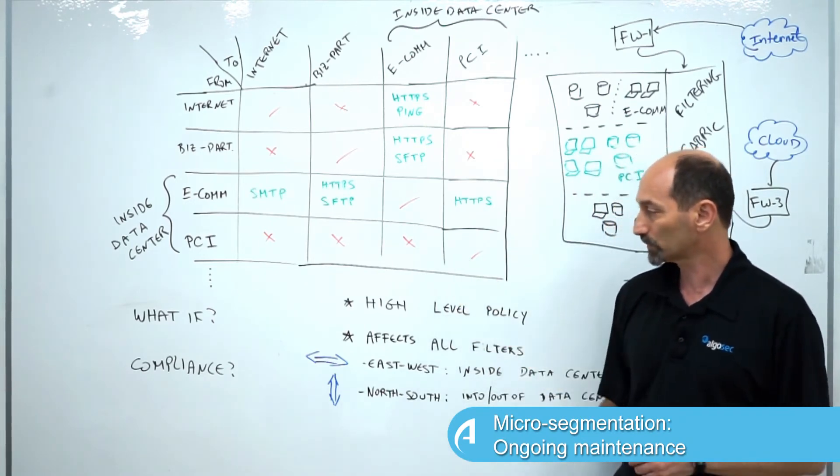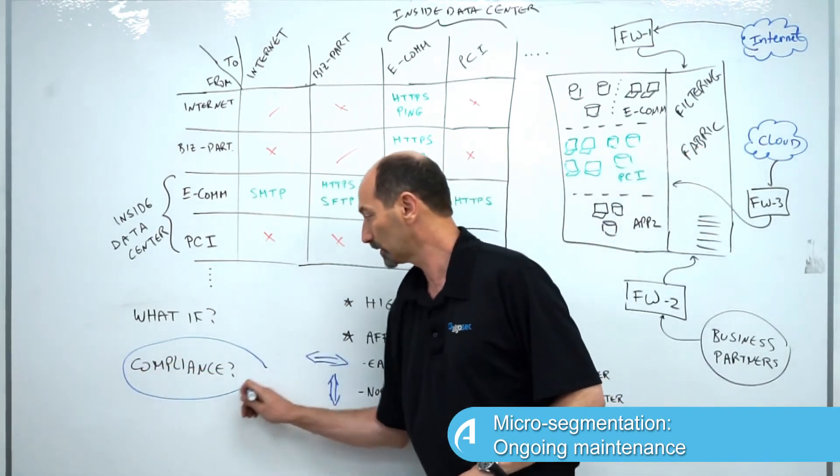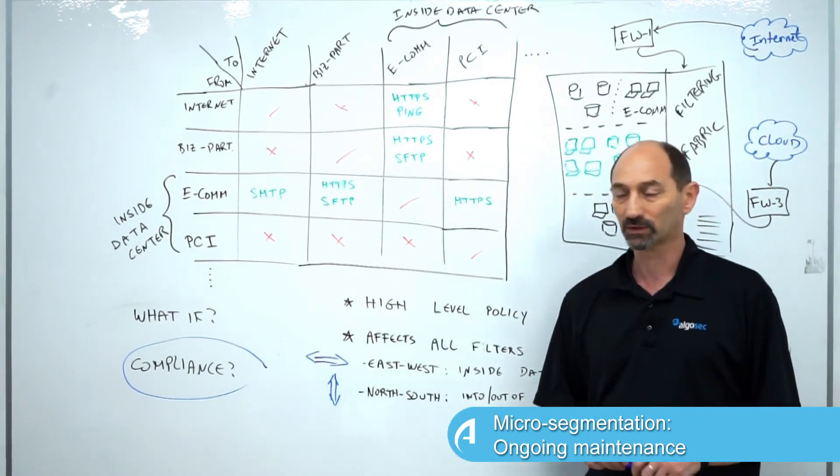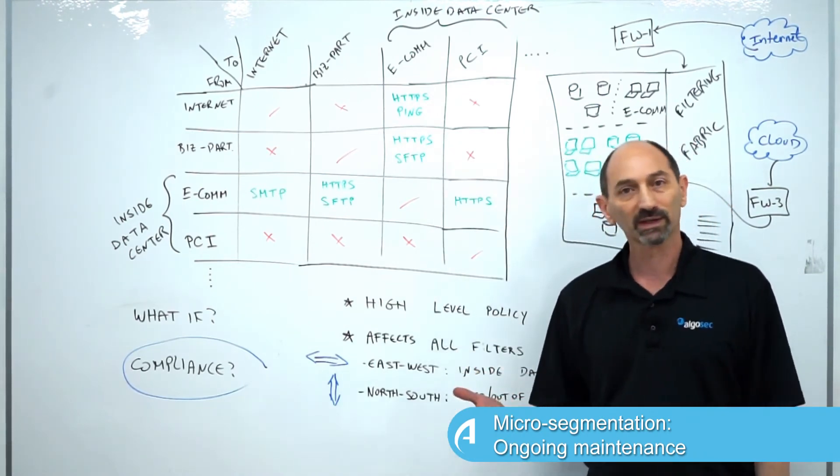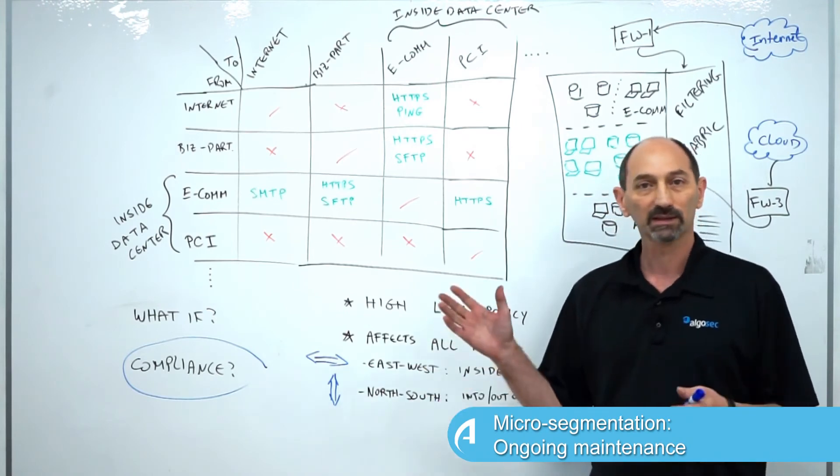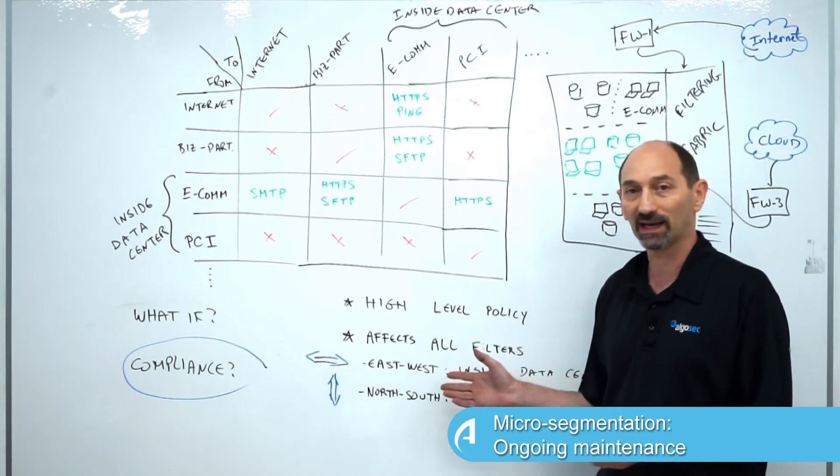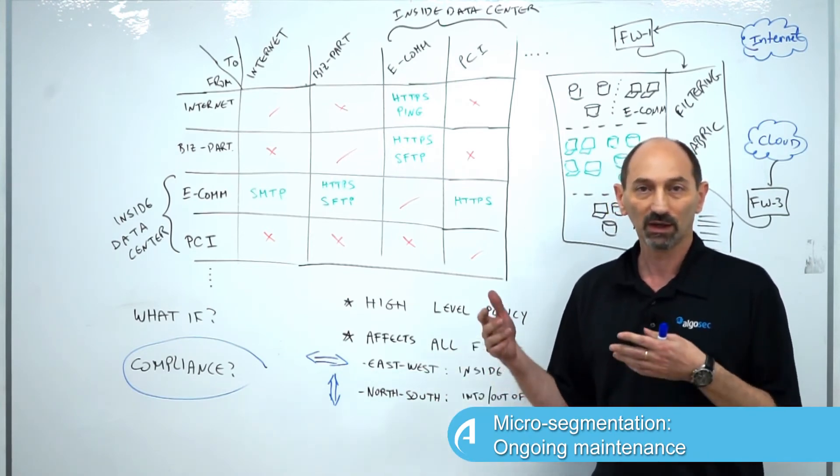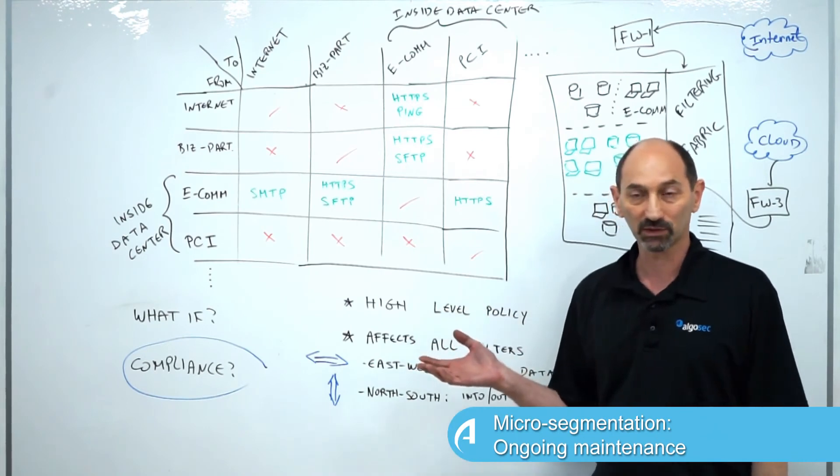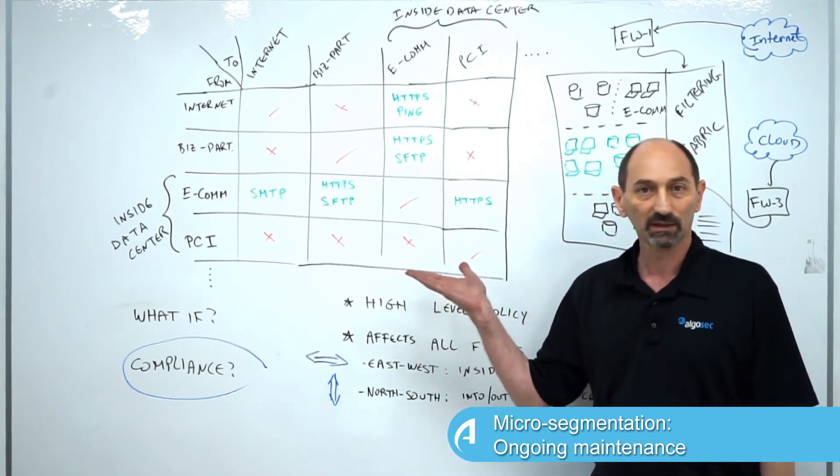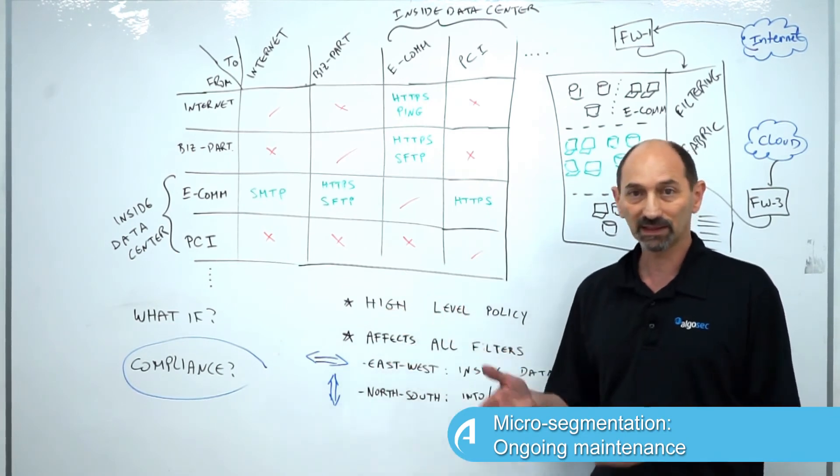The same structure can be used in multiple scenarios. It's not just for a what-if scenario for a new change request. It is also very useful in situations of compliance. Many regulatory compliance standards require organizations to have a security policy. For instance, ISO 27001 is exactly like that. An organization is required to have a policy of what's allowed in the organization.